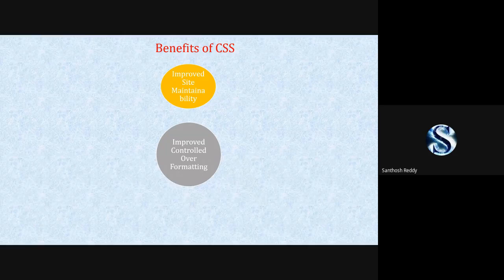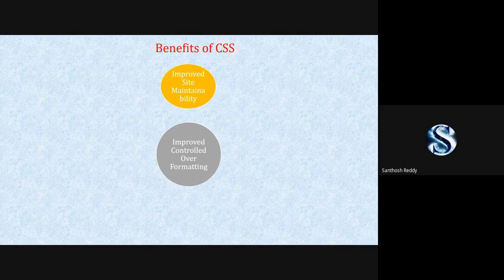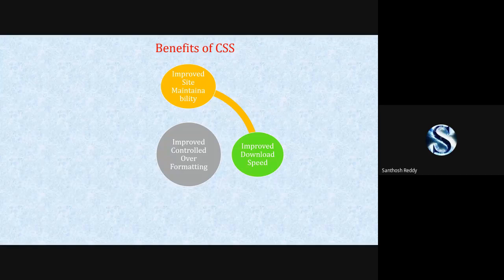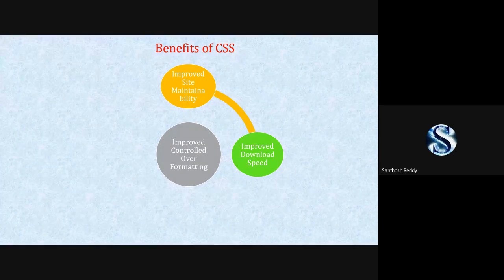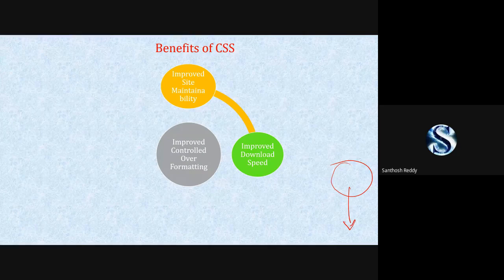Why do they mention improved site maintainability? When we have hosted our project, the formatting of the document will be centralized. We can easily extract and maintain our sites. Next, improved download speed — once we have maintained all the CSS documents in a centralized file, we can easily extract all the documents with a single click, so it is called improved download speed.